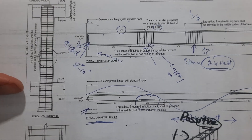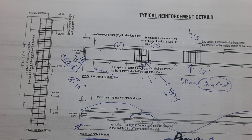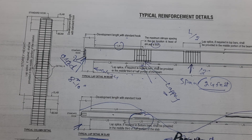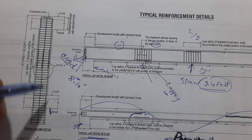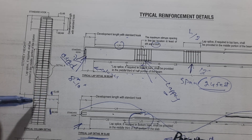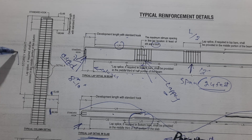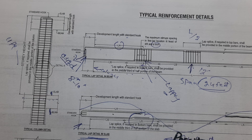Next, let me show you the typical column details. You can see clearly — here is the beam, and on top of the beam is the slab, shown by the dashed line. The story height, which you can keep up to 11 or 12 feet, depends on the height of the structure.